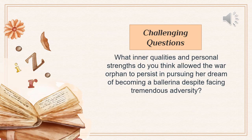After the first reading, we're going to move on to deep reading — reading the texts closely. We're going to be introduced to the author's choice of words, repetition, and point of view. Key questions highlighted include: what inner qualities and personal strengths do you think allowed the orphan to persist in pursuing her dreams of becoming a ballerina despite facing tremendous adversity?